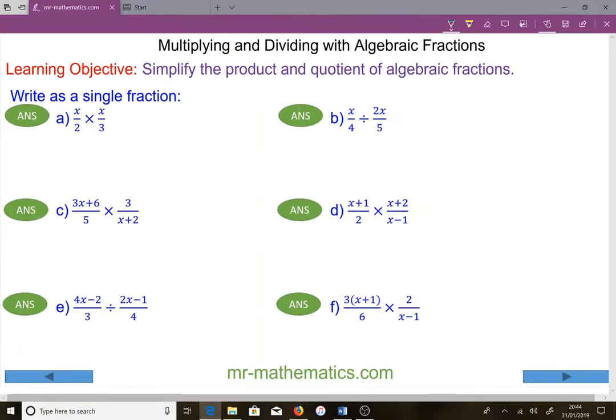In this lesson we're going to multiply and divide with algebraic fractions. For question a, we've got x over 2 multiplied by x over 3. We begin by multiplying the numerators: x squared, which is x times x, over 2 times 3, which is 6.